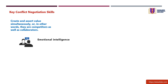Skill one: emotional intelligence. Emotional intelligence is the ability to control your own emotions and recognize others' feelings. Being conscious of the emotional dynamics during conflict negotiation can allow you to remain calm and focused on the core issues. If you are unsatisfied with the current negotiation, express the need for a break so you and the other party can return later with refreshed perspectives.